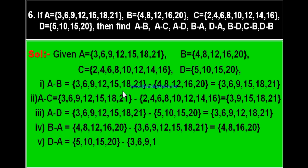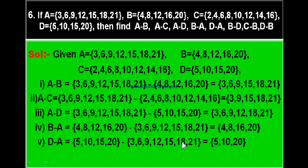Fifth part: D minus A. Set D = {5, 10, 15, 20} minus set A = {3, 6, 9, 12, 15, 18, 21}. 5 is not in A — write 5. 10 is not in A — write 10. 15 is in both — leave it. 20 is not in A — write 20. Therefore D minus A equals {5, 10, 20}. Alternatively, cancel the common element 15 from both sets, and what remains in D is {5, 10, 20}.